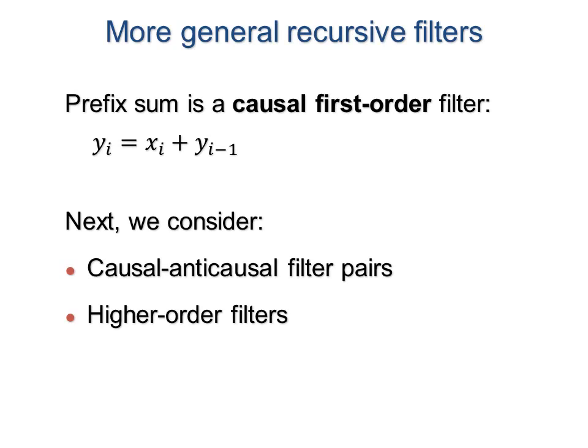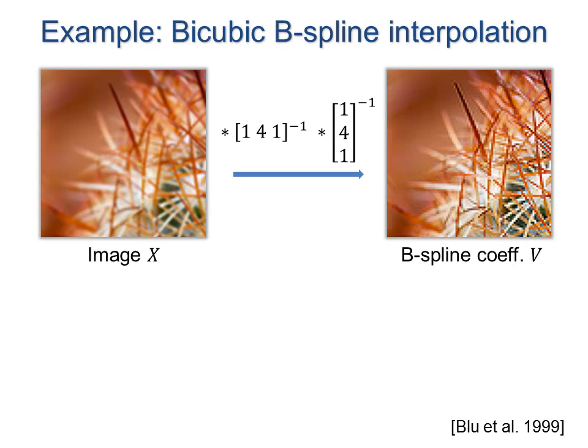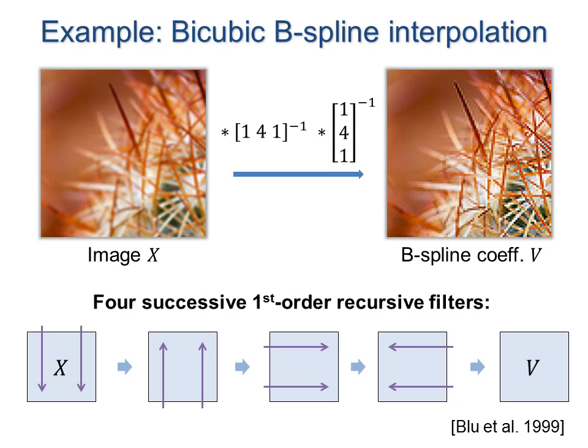The prefix sum used in summed area tables is a causal first-order recursive filter. The idea of overlapped computation is even more beneficial on more general recursive filters. One motivating example is to find the coefficients of a bicubic B-spline that interpolates a given image. While this requires an inverse convolution in each dimension, it can be computed as a sequence of four first-order recursive filters: down, up, right, and left.